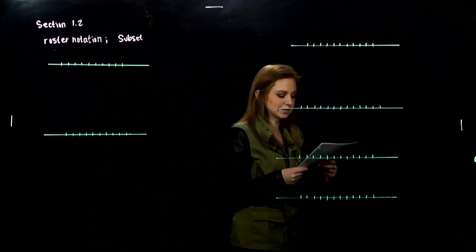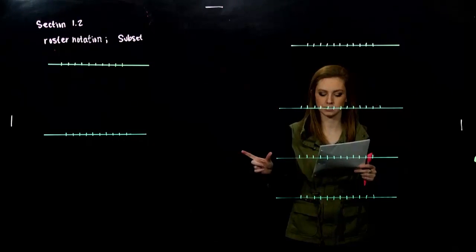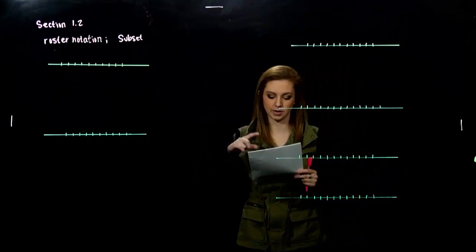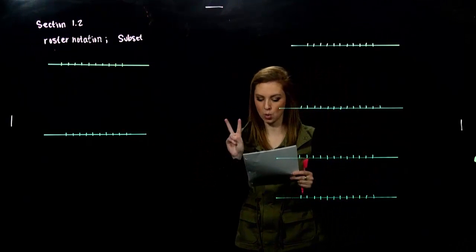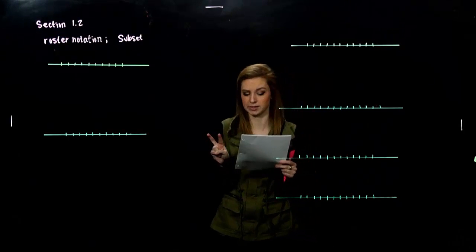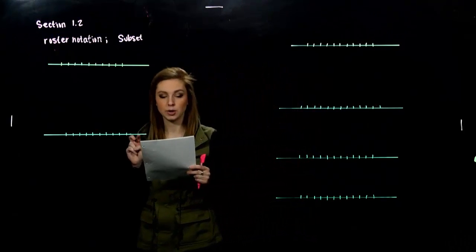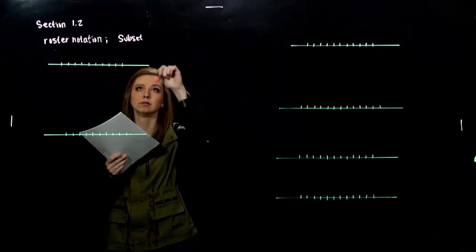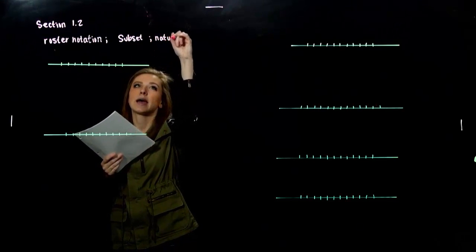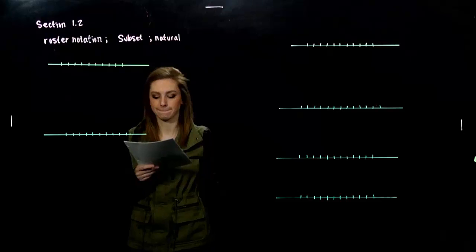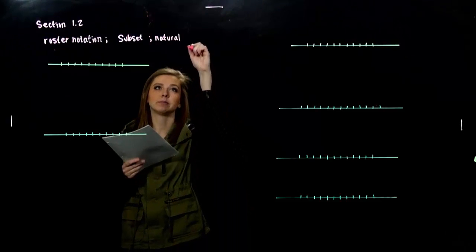And we're going to be looking into the set of real numbers and a few of its subsets. So, two important subsets of the real numbers include the natural numbers that we've seen, we've talked about, the counting numbers, and the whole numbers.